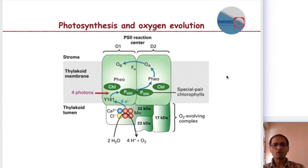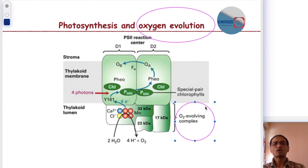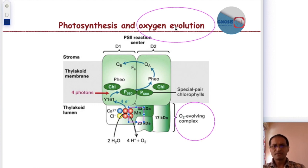Another very important reaction in photosynthesis is the process of oxygen evolution. This oxygen evolution takes place only in Photosystem II, in what we call the oxygen evolving complex, or the water oxidizing clock. The function of this water oxidizing clock is very critical in determining the evolution of oxygen during photosynthesis. We will now try to understand how this process takes place in the water oxidizing complex.